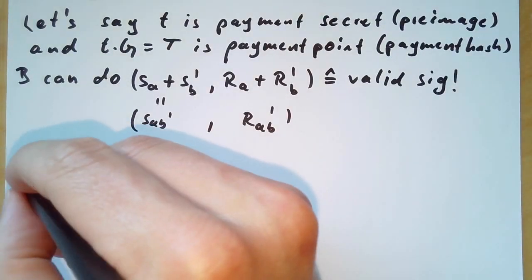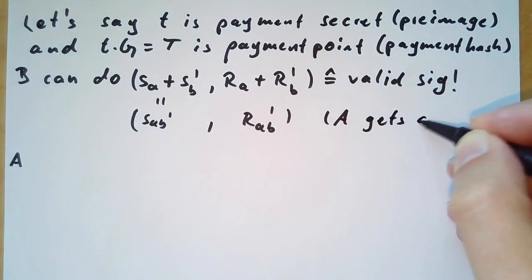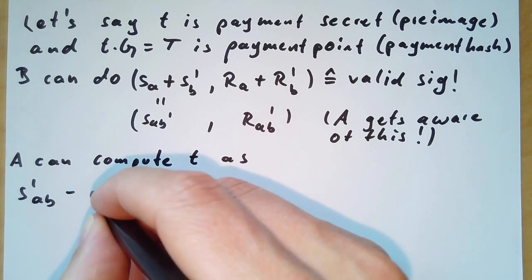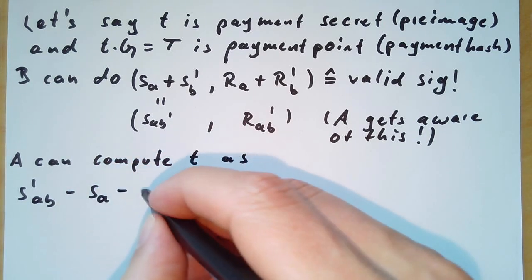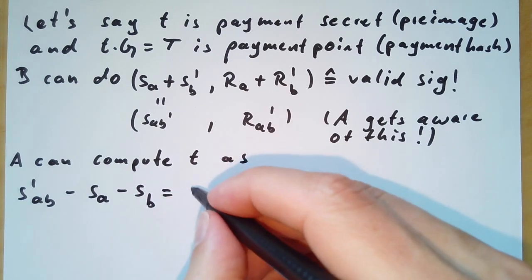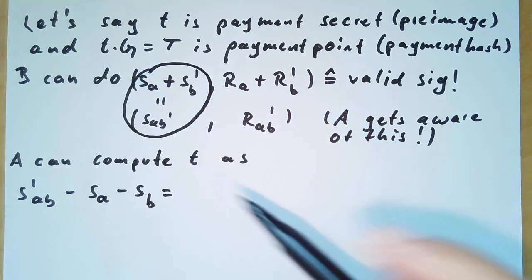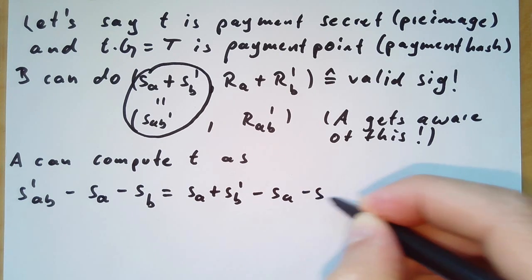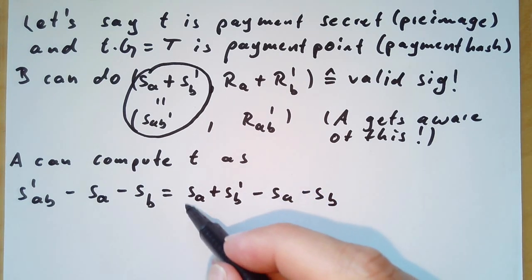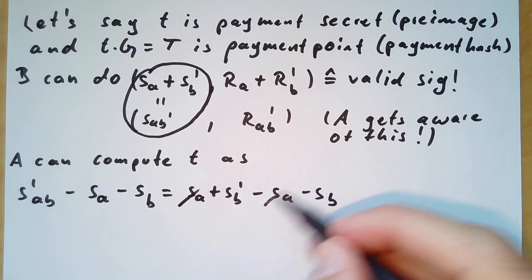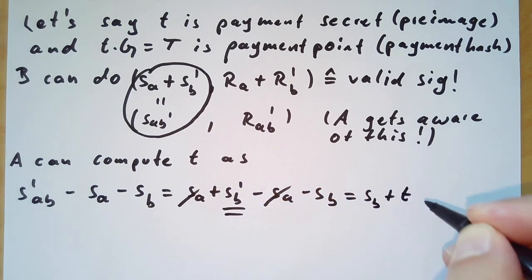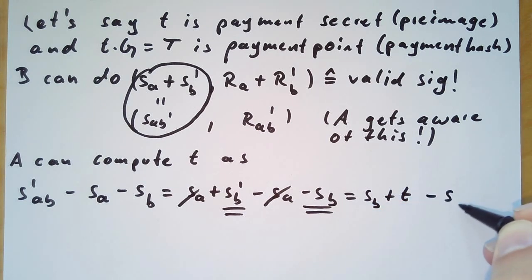Somehow a now gets aware of this multi-adapter signature. I claim that a can compute t as the following: It takes the signature and subtracts its own partial signature and the previously known partial signature from b. As we know by definition, sab' is the same as sa plus sb'. We subtract the two values sa and sb'. We see that sa is there once added and once subtracted, so we can cancel this out. This only leaves us sb' minus sb. We recall the definition of sb' which is sb plus t, and then again we subtract sb and this cancels out. So the thing that is left over is the adapter secret t.